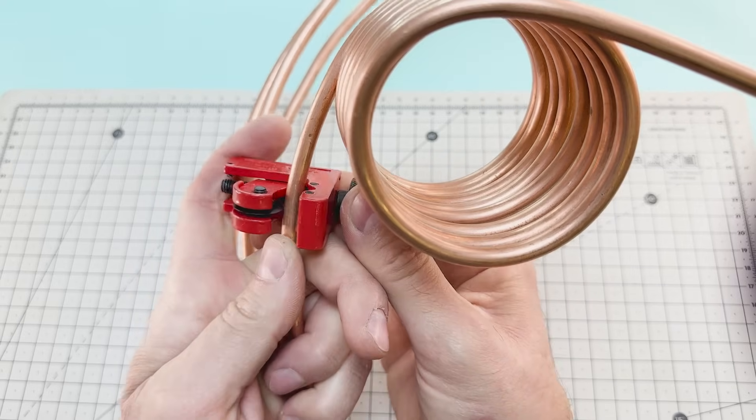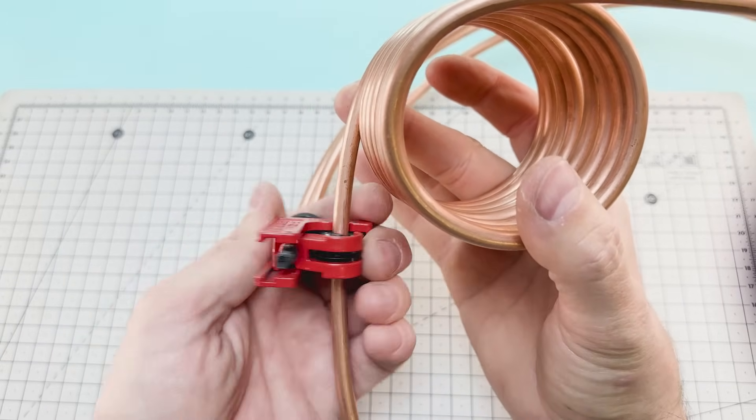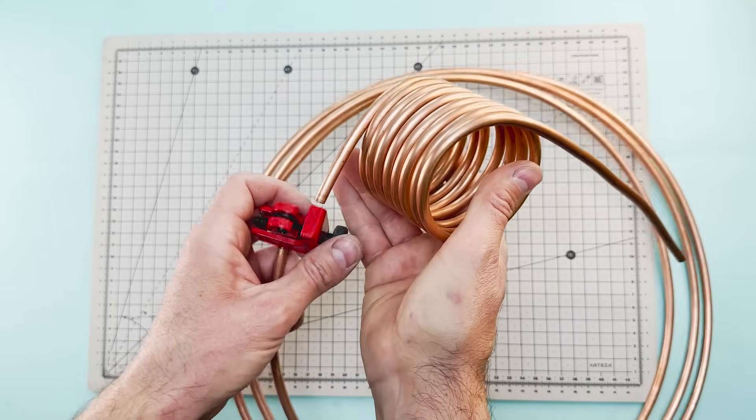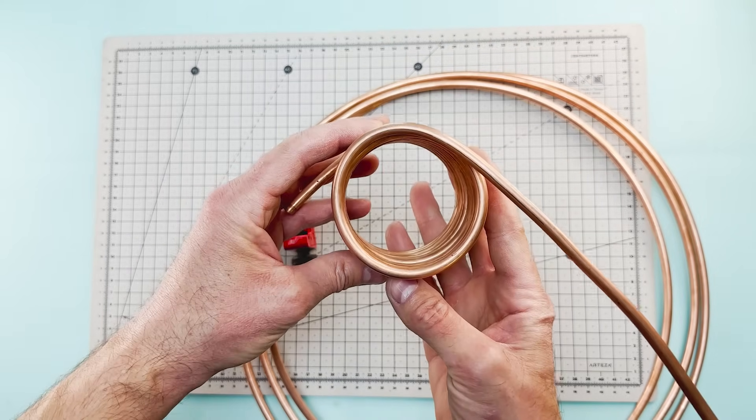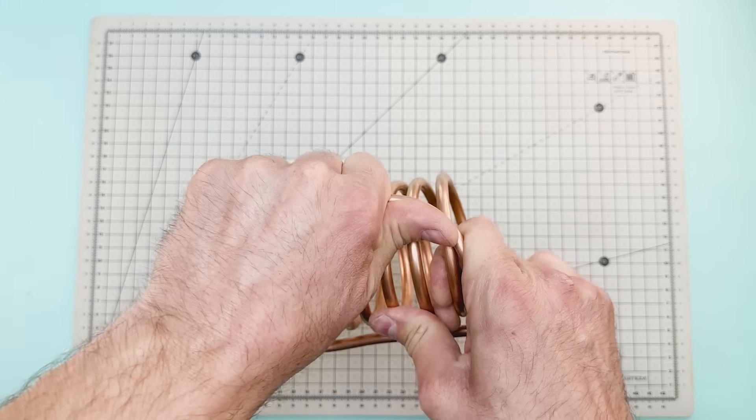Once we have about 8 loops, we proceed to cut the tube and slightly bend the ends so we can connect them later on.